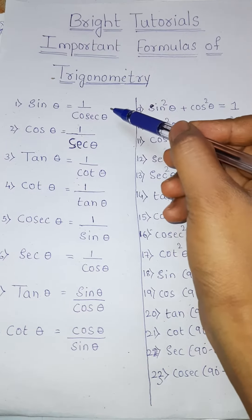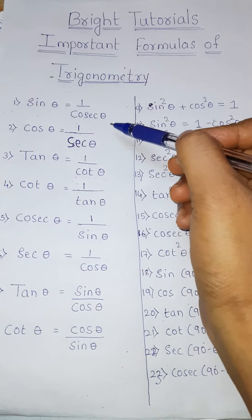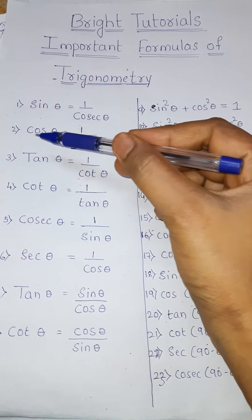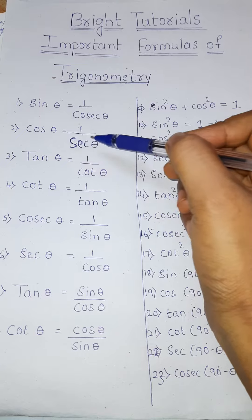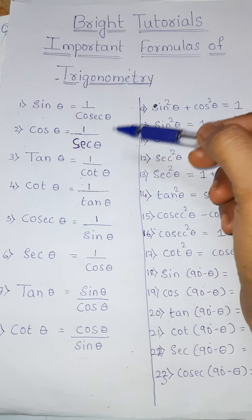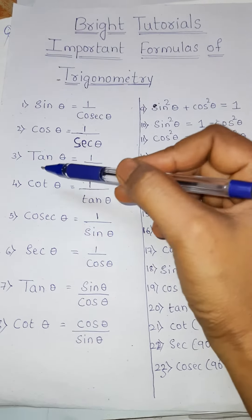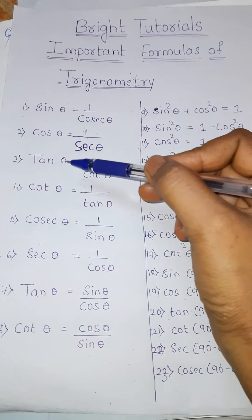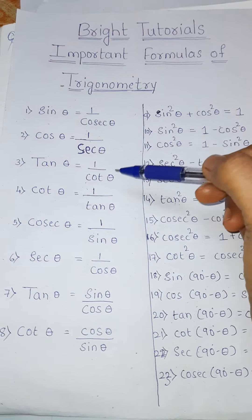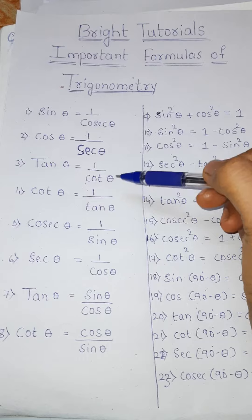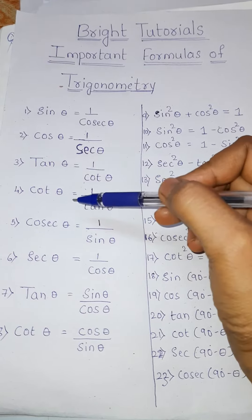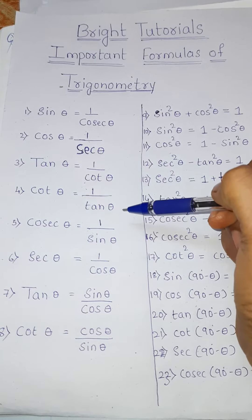First one: sine theta is equal to 1 by cosec theta. Second one: cos theta is equal to 1 by sec theta. Third one: tan theta is equal to 1 by cot theta.